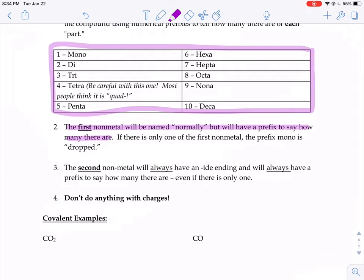The second nonmetal always, 100% of the time has an -ide ending. And always has a prefix to say how many there are, even if there's one. Don't have to rebalance charges at all in a covalent compound.